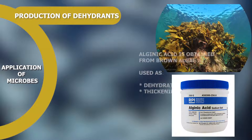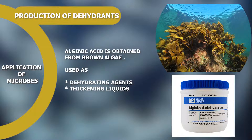Production of Dehydrants: Alginic acid is obtained from brown algae. It absorbs water quickly and is used as a dehydrating agent in waterproofing clothes and in making paper. It is also used in thickening liquids.